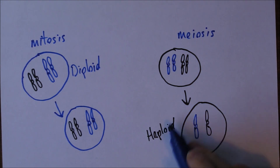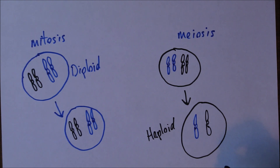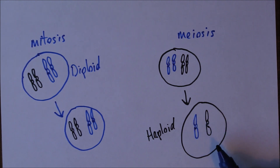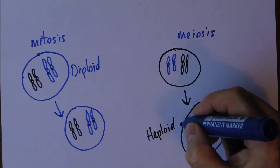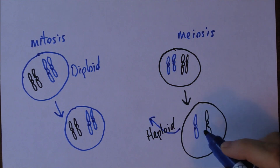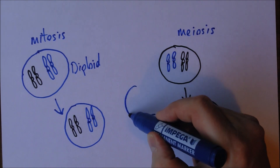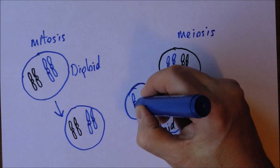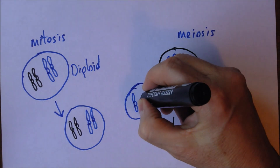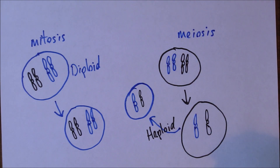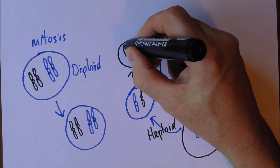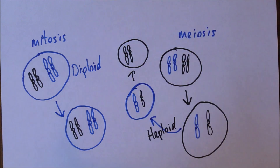This forms the gamete — the sperm or the egg cell. When that combines with another gamete, the ovum will also contribute one chromosome from each pair. So when we reproduce, the chromosome from the male meets up with its counterpart from the female, which also contains one chromosome from each pair. When these combine, we end up with a new diploid cell with 23 pairs of chromosomes again.